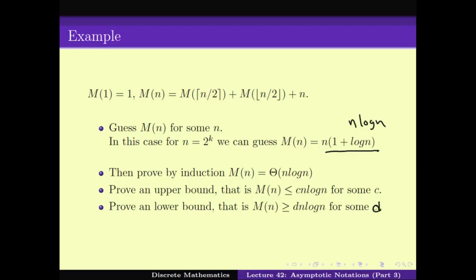I would like you to solve these problems yourself as you watch this video. For this particular problem M(N), we have already shown M(N) ≤ 2N log N and M(N) ≥ ½ N log N. The important thing to know is how to choose C and D: you assume M(N) ≤ C · N log N, go through the full induction reasoning, and find a C for which the inductive step goes through.